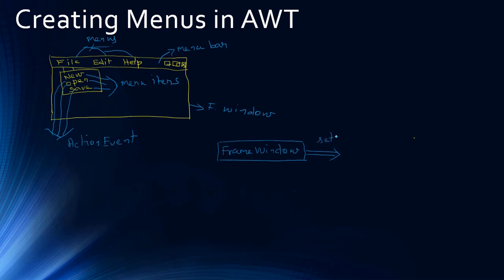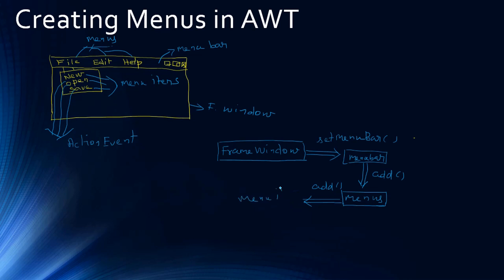You can call setMenuBar on your frame window to attach a menu bar to it. Then to the menu bar you can call the add method to add one or more menus. Similarly, you can call the add method to add one or more menu items to the menus. That's the relation: frame window uses setMenuBar to set the menu bar to the top-level container window, then use the add method to add menus and menu items.